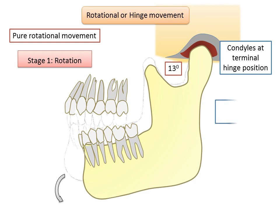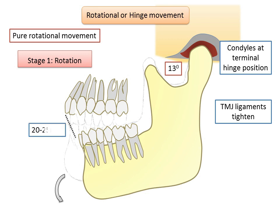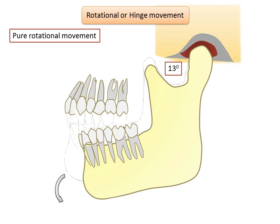At this point of opening, the temporomandibular ligaments tighten, after which continued opening results in an anterior and inferior translation of the condyles. In centric rotation, the mandible can be rotated around the horizontal axis to a distance of 20 to 25 millimeters as measured between the incisal edges of maxillary and mandibular incisors.